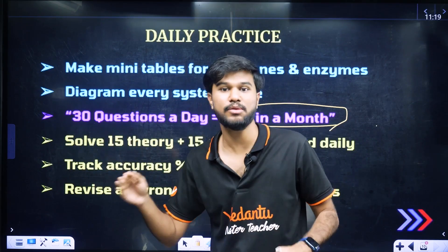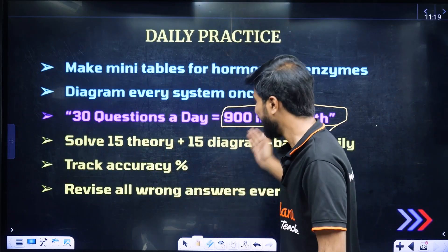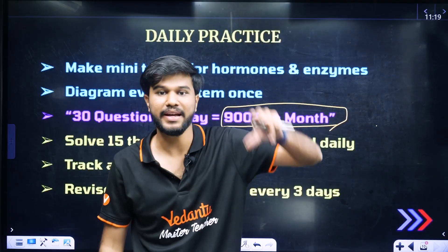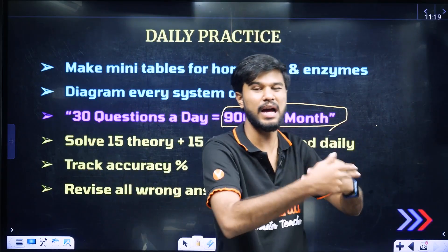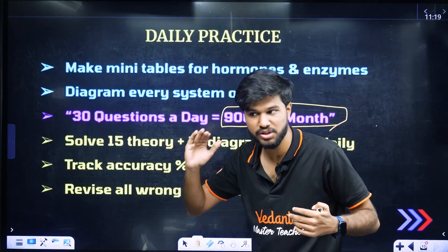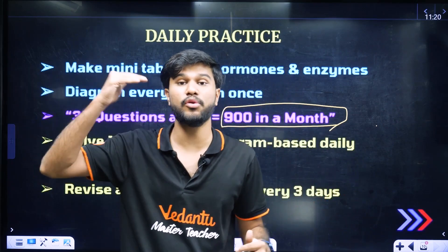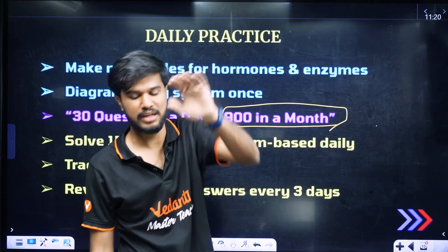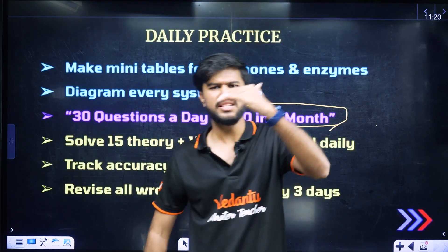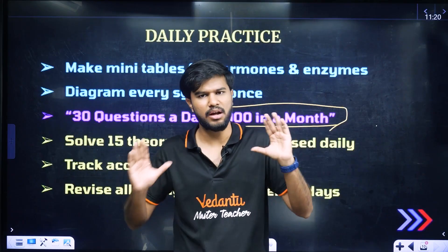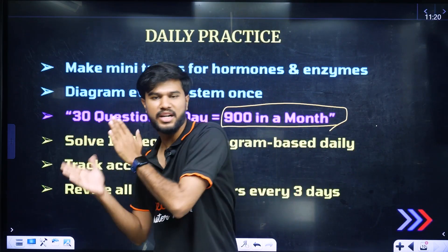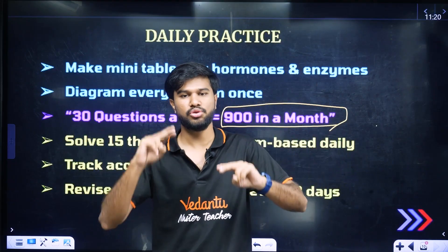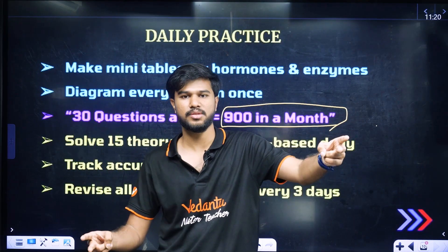If you have questions, you can practice and clear them easily. Focus on accuracy, maintain an error book, and revise it. In just 25 days, master the subject concepts and take a revision. You can achieve 180/180 in zoology, and 360/360 combining with botany is the goal — at least 350 plus.